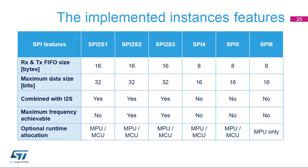The STM32MP1 devices embed six SPI instances and each supports all the features presented so far. SPI2S1, SPI2S2, and SPI2S3 are multiplexed with the I2S interface and have double extended FIFOs and data size registers. Optional sources and maximum frequency of kernel clock provided by RCC differ instance by instance. More details are available in the product reference manual and associated data sheets.